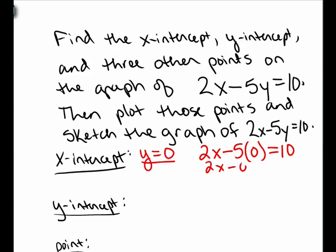I have 2x minus 0 equals 10, which means 2x is equal to 10. Dividing both sides by 2, I see that x is 5. So the x-intercept is the point x is 5, y is 0.